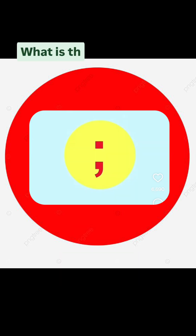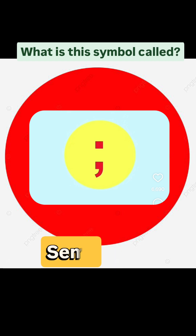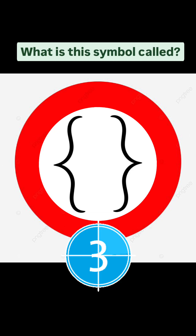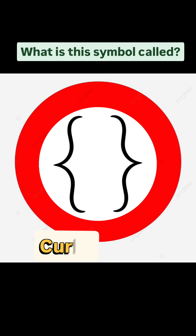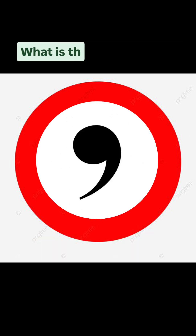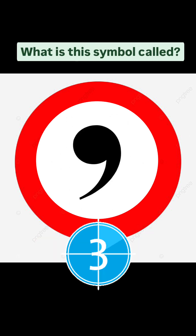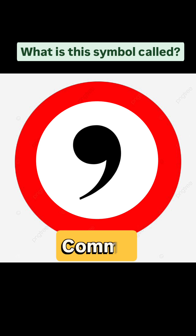What is this symbol called? Semicolon. What is this symbol called? Curly bracket. What is this symbol called? Comma.